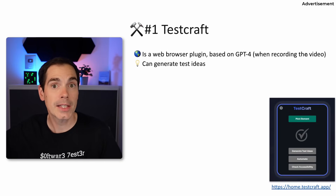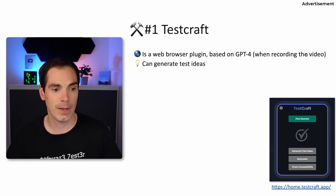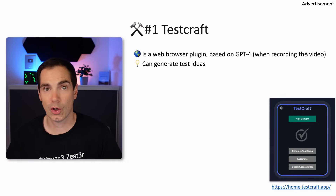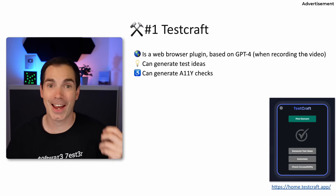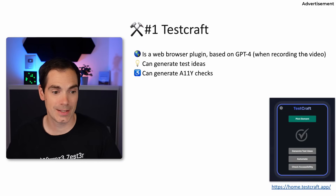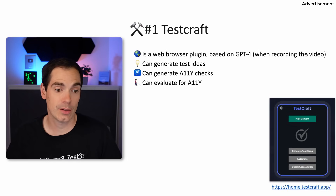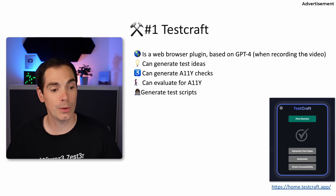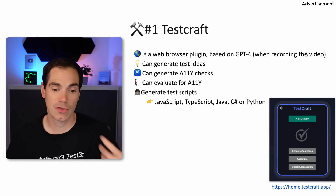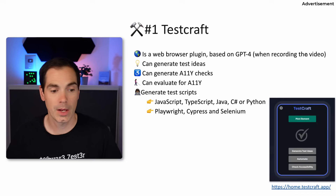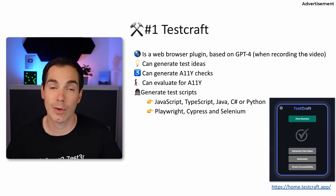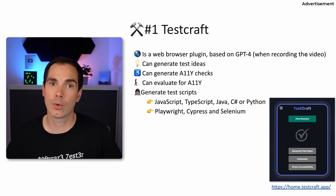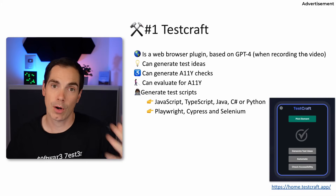TestCraft is really easy to install and easy to use. It can generate test ideas, check accessibility on the web product you'd like to test, and evaluate accessibility as well, which I think is really cool. It can generate test scripts in JavaScript, TypeScript, Java, C#, or Python. You can ask for test automation scripts for Playwright, Cypress, or Selenium — really handy to get an idea of what the tool is suggesting.